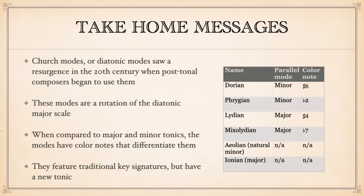We have learned a lot about modes in this video. The church modes or diatonic modes from the medieval and renaissance eras make a comeback in the 20th century. Each mode is a rotation of the diatonic major scale, but it's easiest to compare the modes to the major and minor scale tonics that they sound like, with the addition of a color note. Remember that you'll always use a traditional key signature, but the tonic will be different because we are on a different rotation. Work to memorize the chart and you will have no problem constructing any mode. That's all for now — thanks for watching!